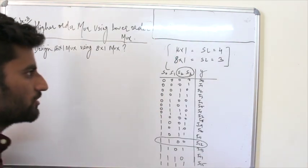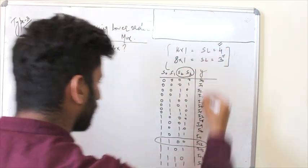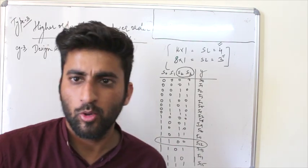First, we know that 16-to-1 needs 4 select lines and 8-to-1 needs 3 select lines. So, total select line 4 and 3 select lines are required.